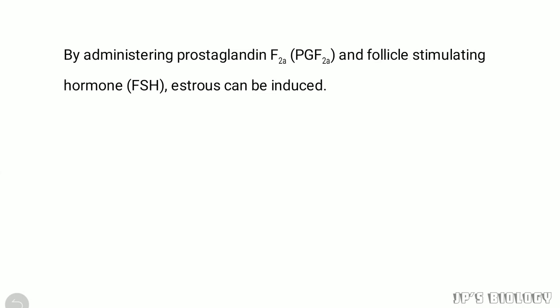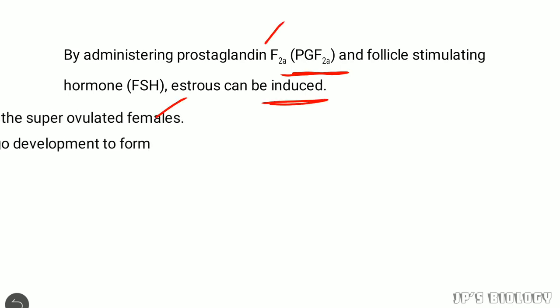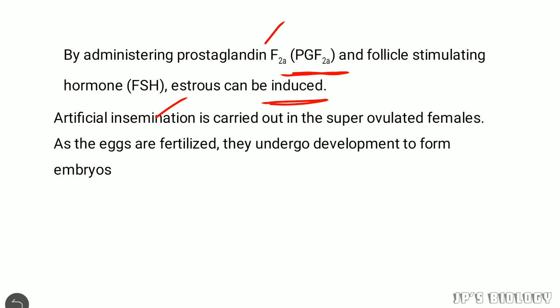By administering prostaglandin F2A and follicle stimulating hormone, estrous can be induced. After this hormone injection, the estrous cycle is induced. After that, artificial insemination is carried out in super ovulated females. All eggs are fertilized and undergo development to form embryos.